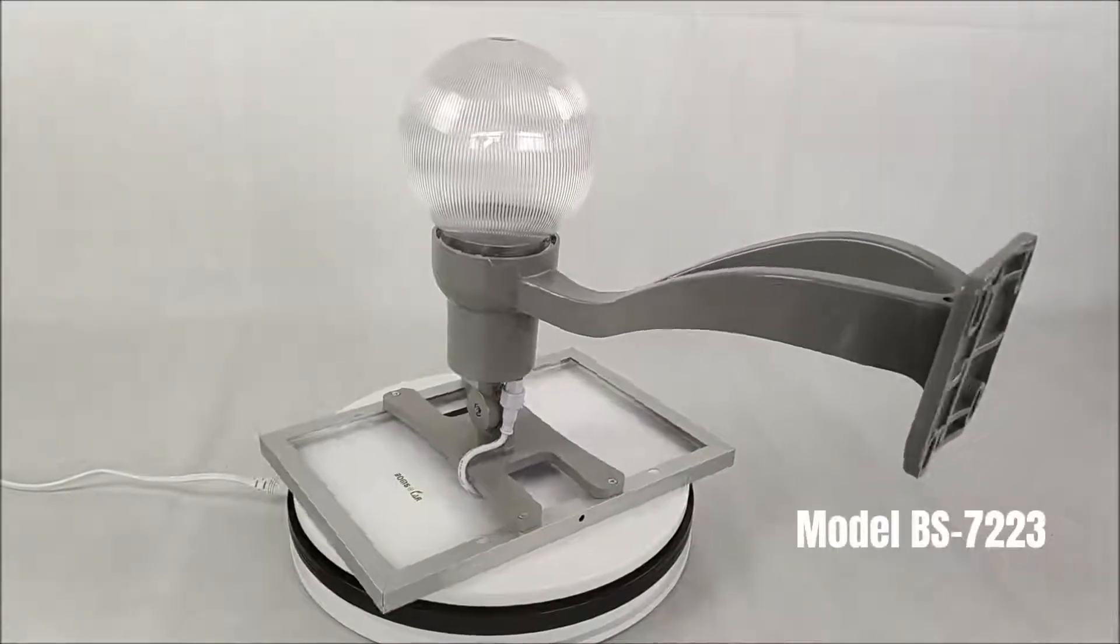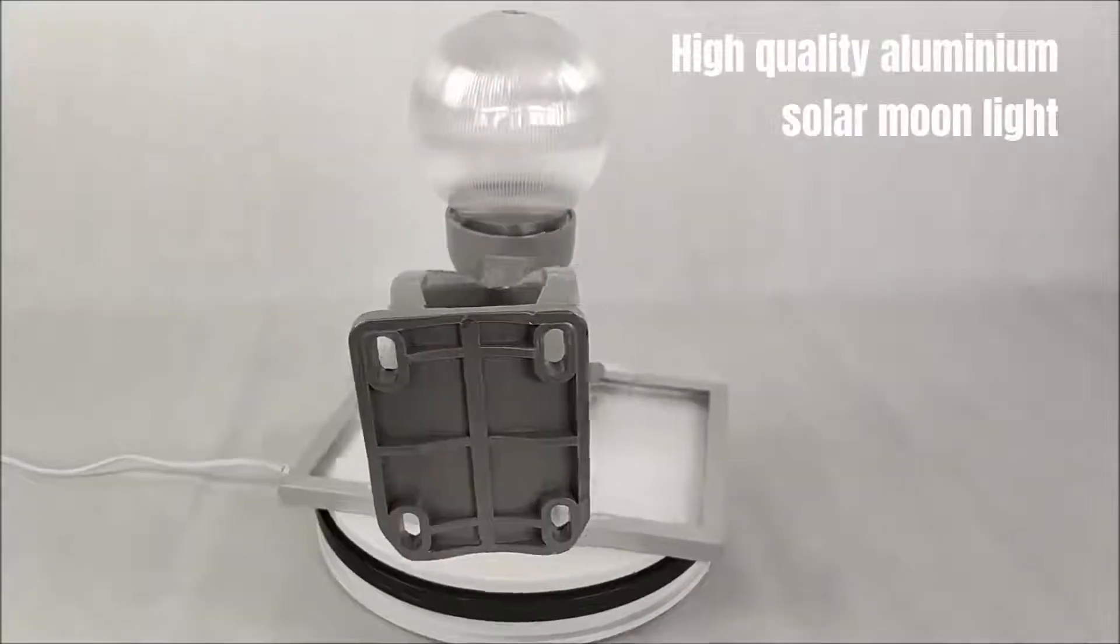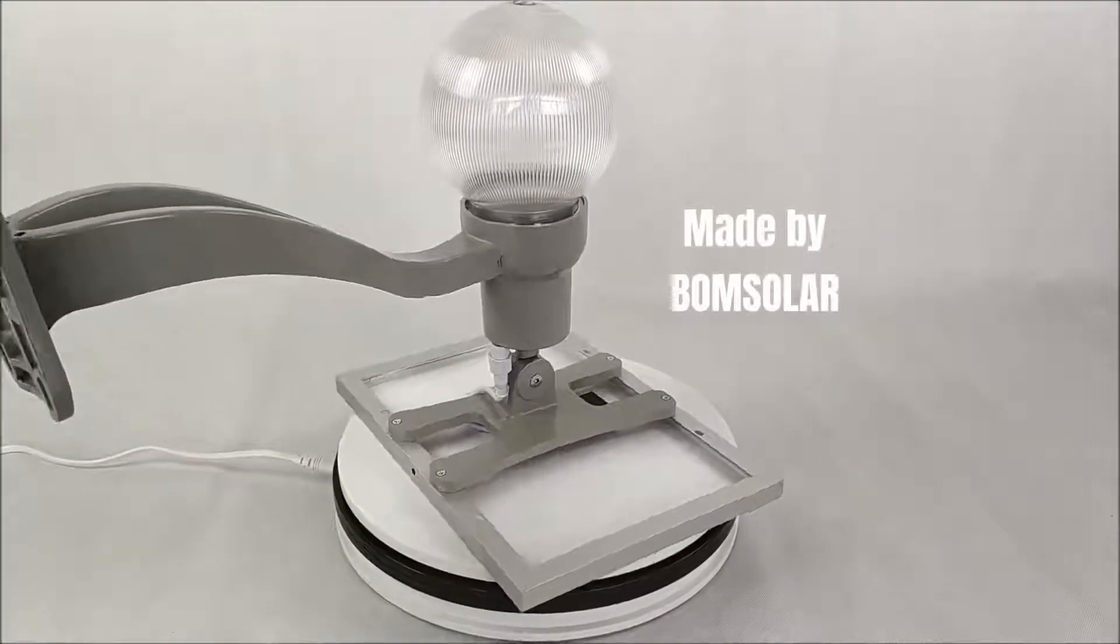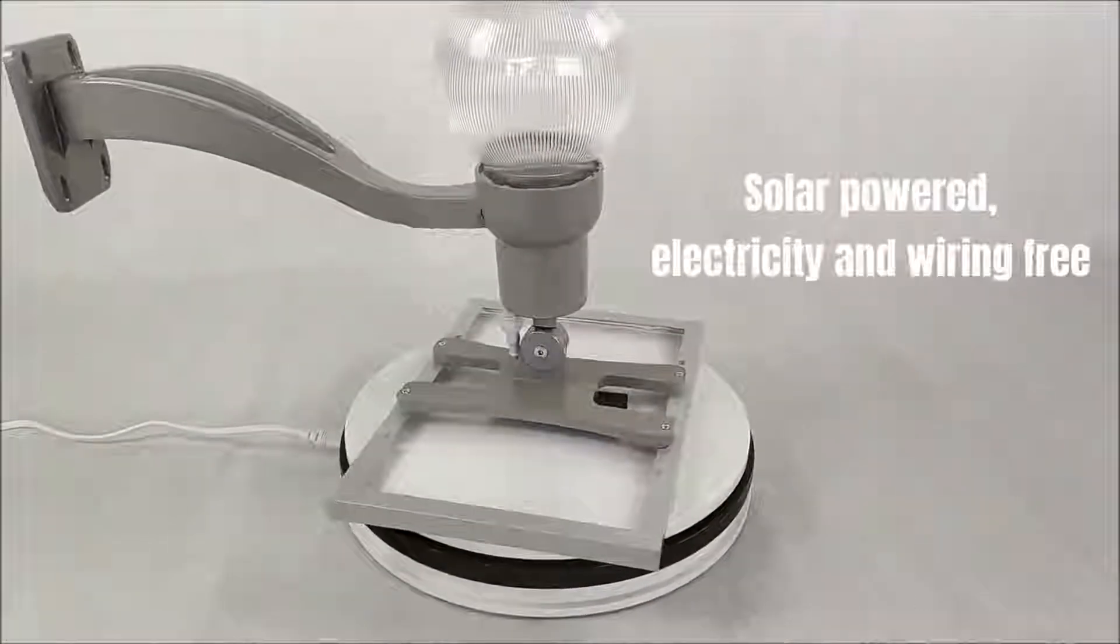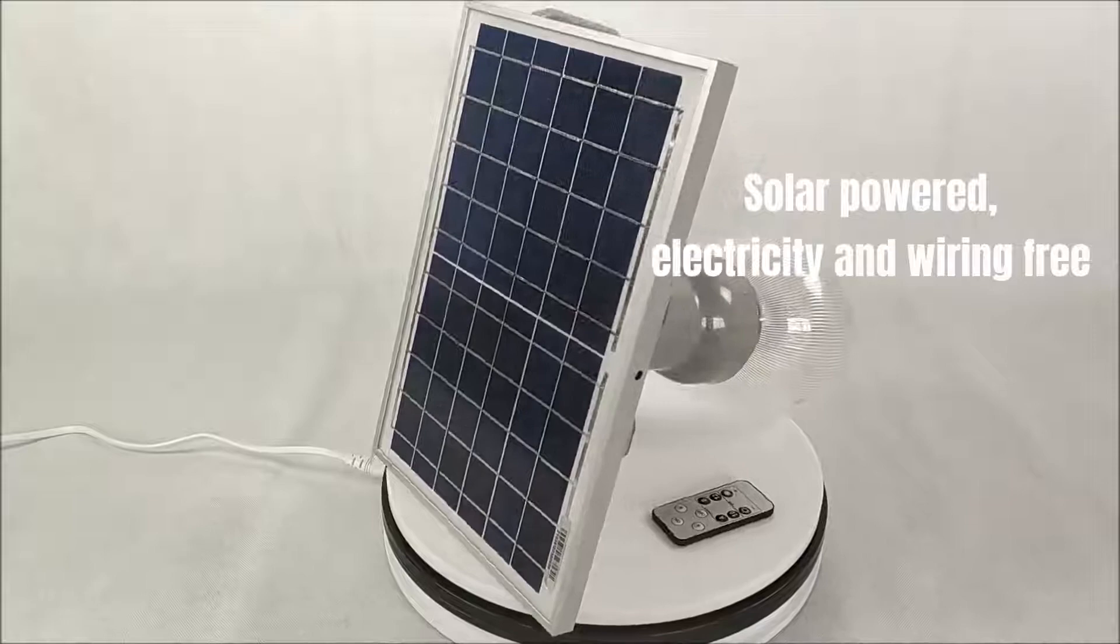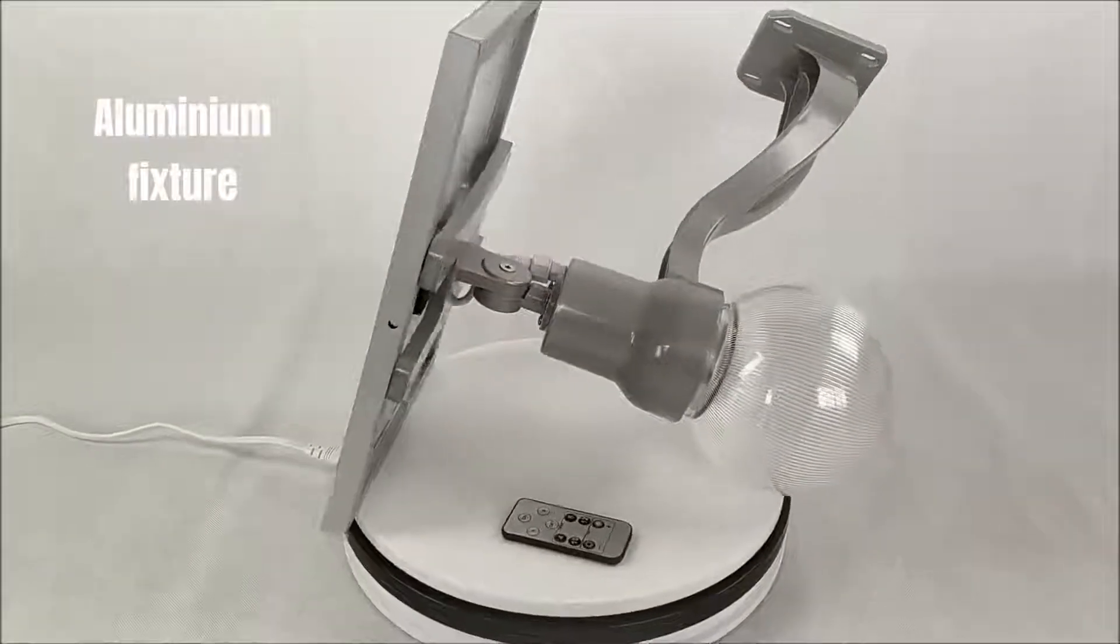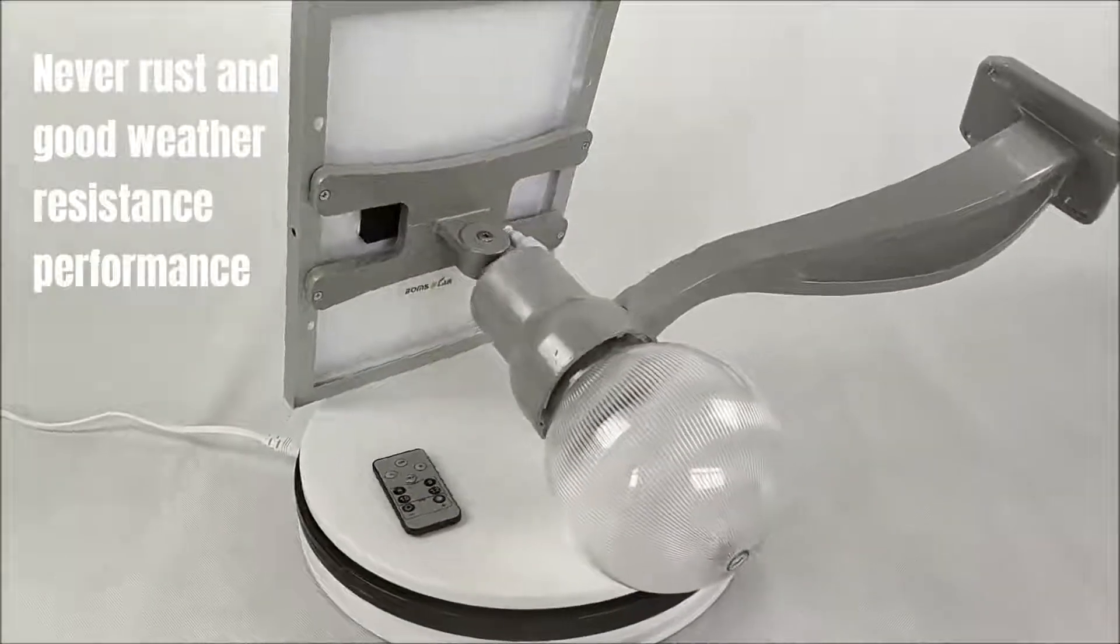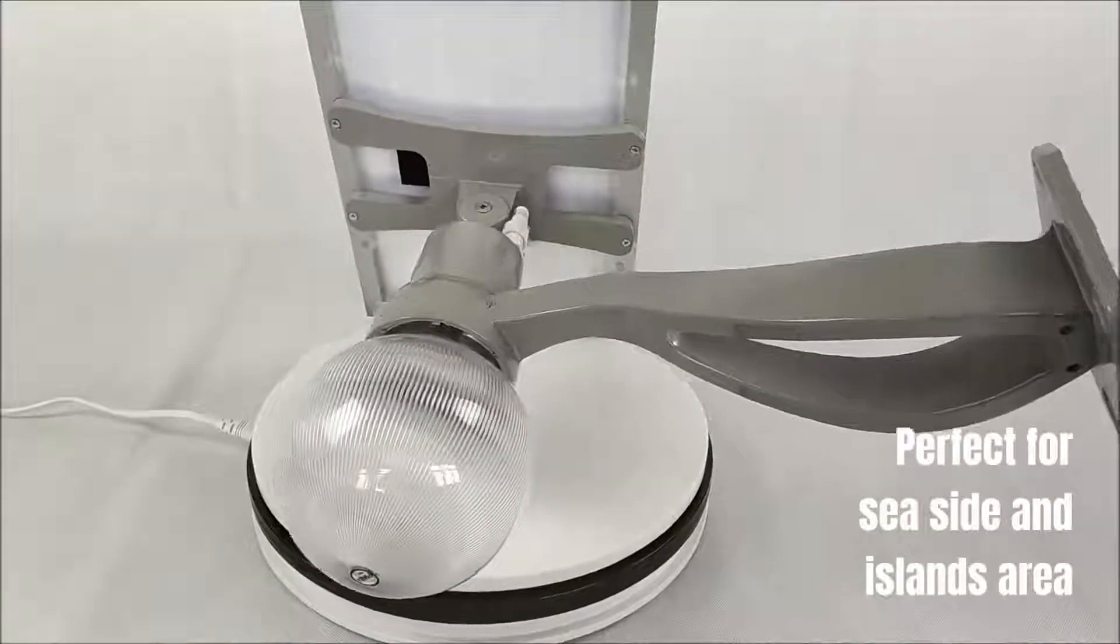Model BS-7223 is a high-quality aluminum solar moonlight made by BOMSOLAR. Solar powered, electricity and wiring free, the aluminum fixture never rusts and has good weather resistance performance, perfect for seaside and island areas.